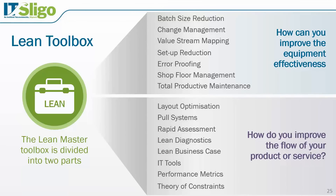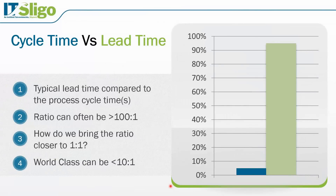One key message of lean is the concept of cycle time versus lead time. Cycle time is the time a part goes into a machine to the time it comes out — or the time you spend working on a particular transaction. For example, it might take five minutes. The lead time is how long it takes the customer to actually receive their product — that ratio might be 500 minutes, or eight hours later. The ideal would be that cycle time equals lead time, but that's not practical. World class can be less than a 10-to-1 ratio.